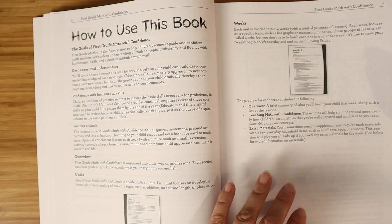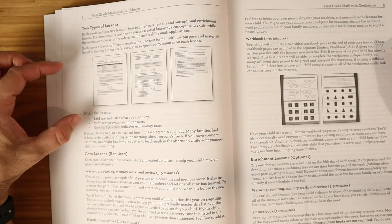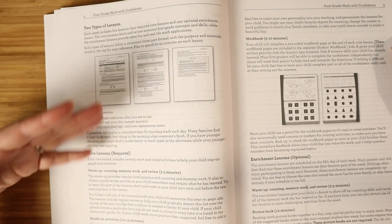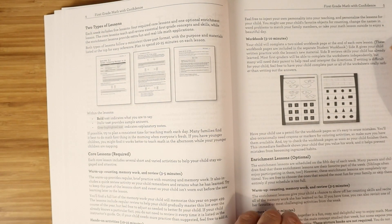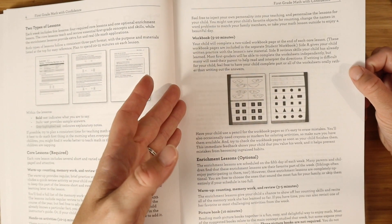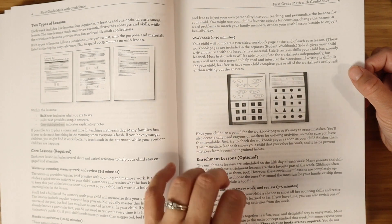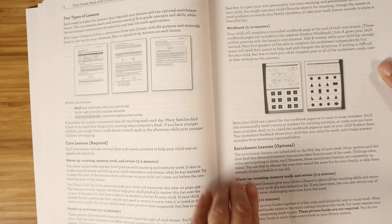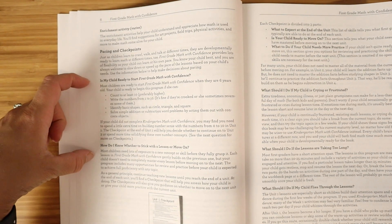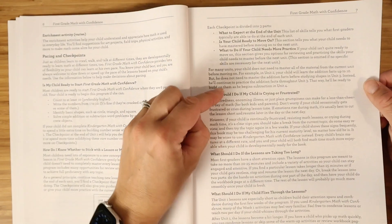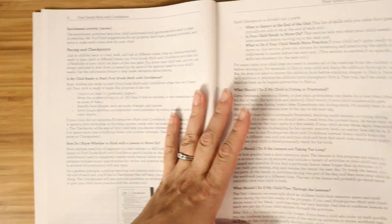Then we jump into our introduction, all about how to use this book, how it's broken up into different weeks, talking about proficiency and attitude, going into the two different types of lessons, which are the core lessons and the enrichment lessons. What if my child is crying or frustrated? What if they're taking too long? You can tell that a homeschool parent has written this curriculum because these are all things that happen.